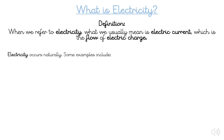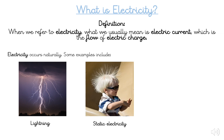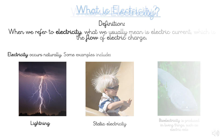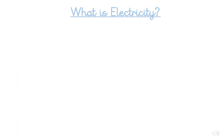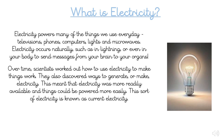Electricity occurs naturally — some examples are on the screen. Electricity powers many of the things we use every day, for example televisions, phones, computers, lights and microwaves. It also occurs naturally, such as in lightning or even in your body to send messages from your brain to your organs. Over time, scientists worked out how to use electricity to make things work and discovered how to generate it. This meant electricity was more readily available, and this sort of electricity is known as current electricity.